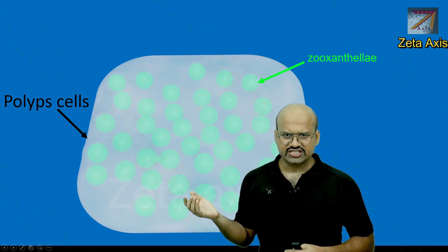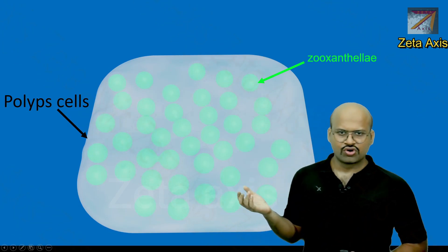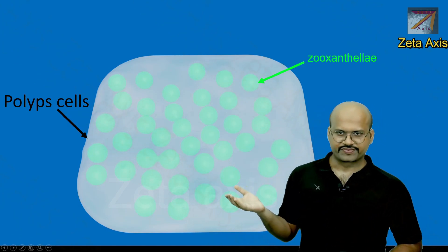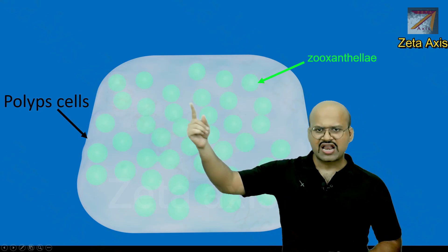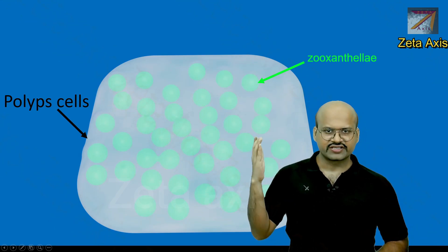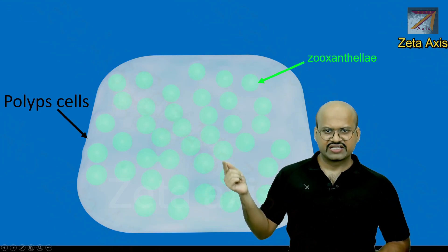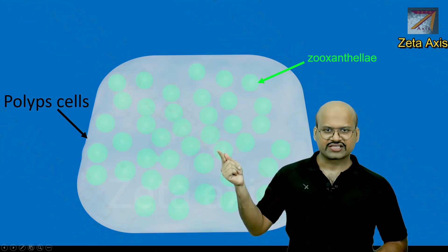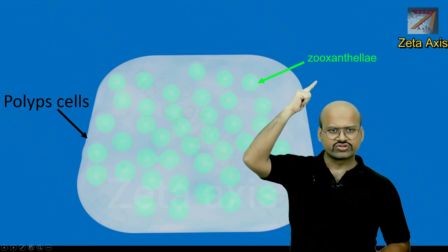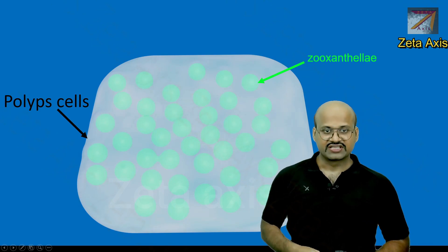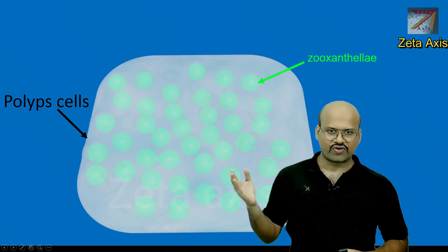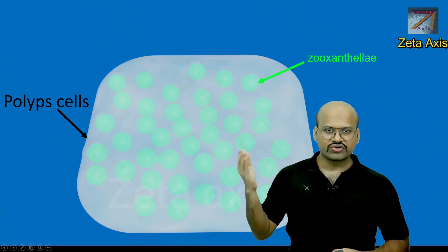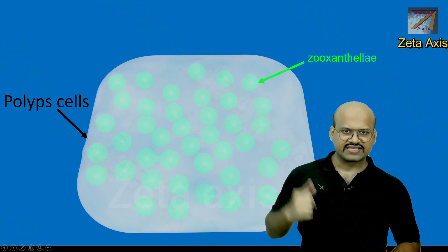If you look at a single tissue of a polyp, we can see that there are a large number of pigmentations within the cell. These small pigmentations are zooxanthellae — the algae which perform photosynthesis and provide nutrients or food to the cell.